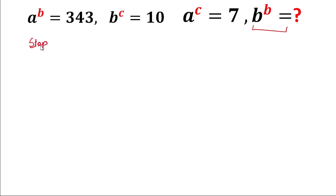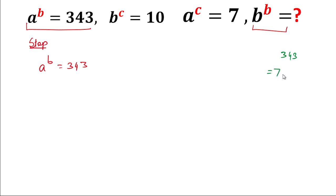Our first step will be to solve a^b = 343. The value 343 is the multiplication of 7 three times: 7 × 7 × 7 = 343, which we can write in the form of a cube as 7³. So in place of 343, we write 7³.